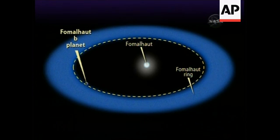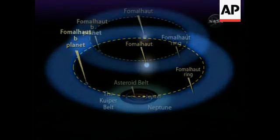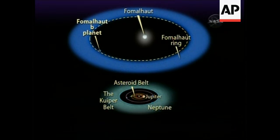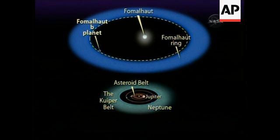A comparison between our solar system and the Fomalhaut solar system — if we can put the comparison slide up, that would be great. It gives you some idea of the differences in scale. There are some similarities between the two systems and there are also a lot of differences. Fomalhaut is a brighter star than our sun — it's 16 times more luminous — and the whole system is on a much grander scale than our own solar system.